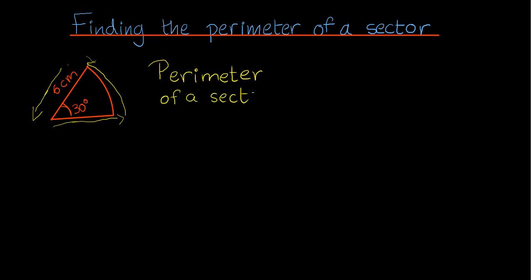Let's just quickly write this down. Perimeter of a sector is equal to the arc length plus radius plus radius, or we could just write it as the arc length plus two times the radius.